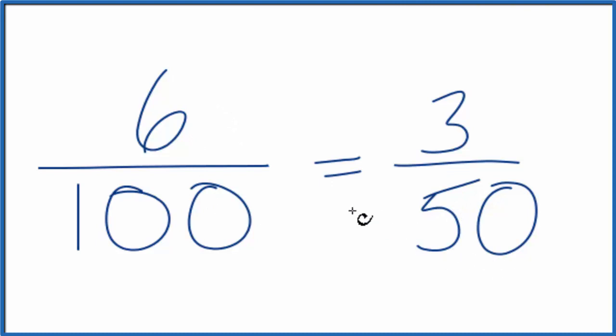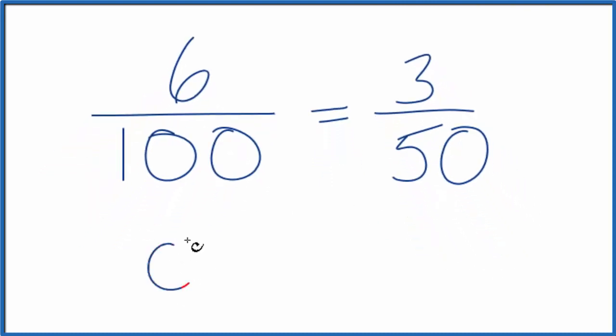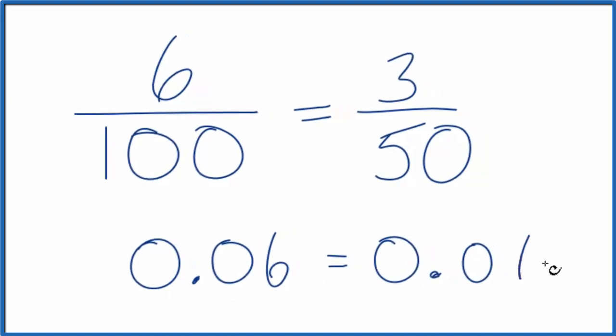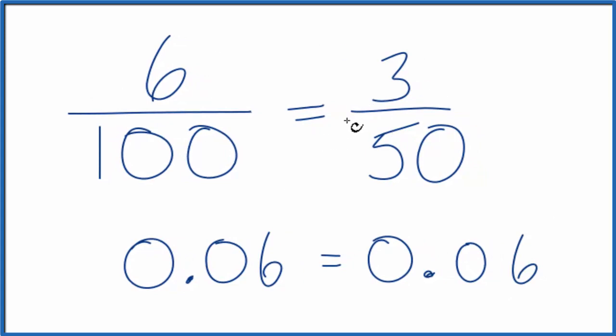If you want to check that, you could divide 6 by 100 in your calculator. You'll get 0.06. If you divide 3 by 50, you also get 0.06. These are equivalent fractions. The value's the same; we just have different numerators and denominators.